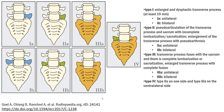And Type 2b, you can see in image 2b, is a bilateral pseudo-articulation of the transverse process and sacrum with incomplete lumbarization or sacralization, with enlargement of both transverse processes with pseudo-arthrosis bilaterally.